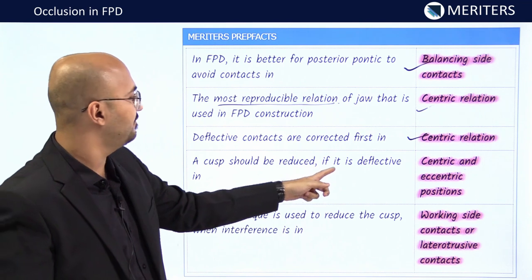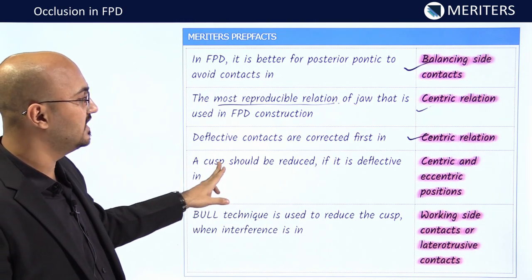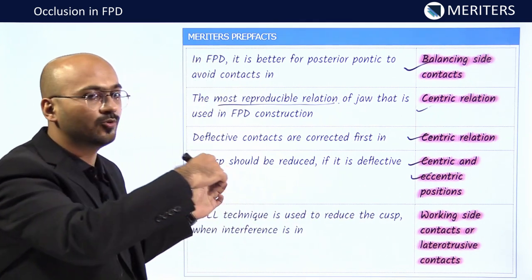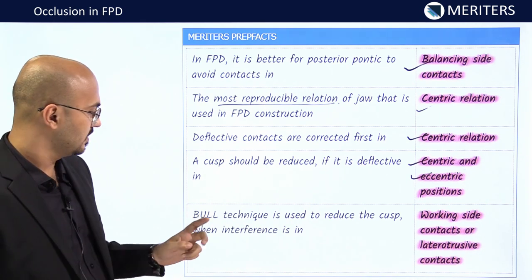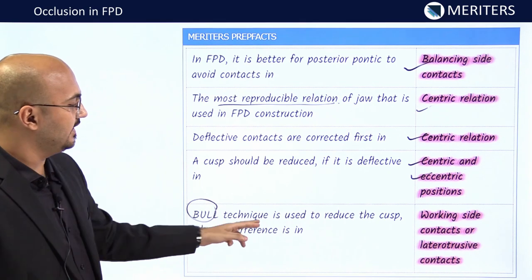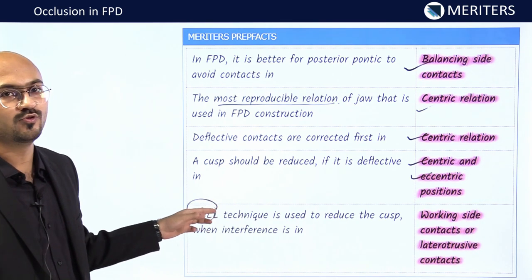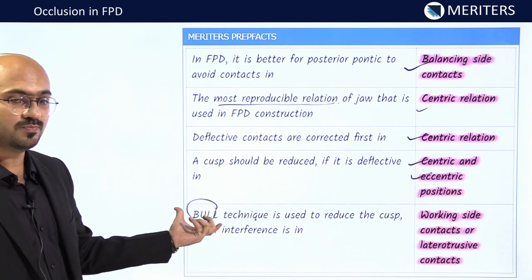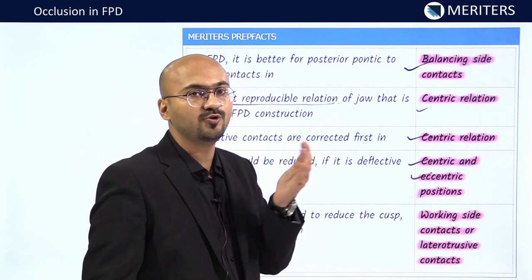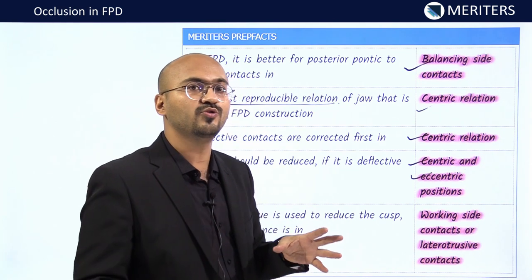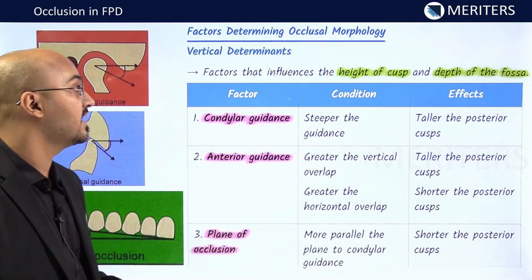A cusp should be reduced if it is causing interference in centric as well as eccentric positions — in protrusion, lateral, and all kinds of movements. The BULL technique is used to reduce the cusp when interference is present: BULL stands for Buccal of Upper and Lingual of Lower, which are non-functional cusps. When you have working side or latertrusive contacts with interference on the working side, you reduce those non-functional cusps — buccal of upper and lingual of lower.